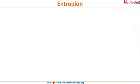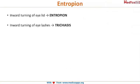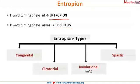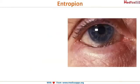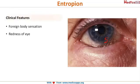Now let's look at entropion — by definition, it is the inward turning of the entire eyelid including the lashes. If only the lashes and not the entire lid turn inwards, that is called trichiasis. Entropion is divided into four types: congenital, cicatricial, involutional (most common), and spastic — mnemonic: 'SICK'.